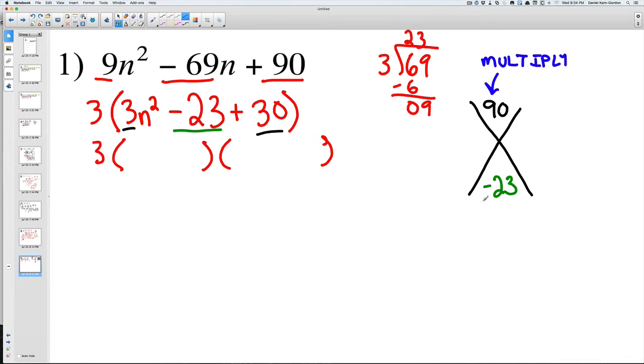So when we think about 90, we have 90 times 1, we have 45 times 2, we have 30 times 3.